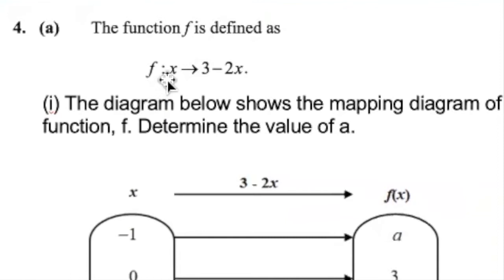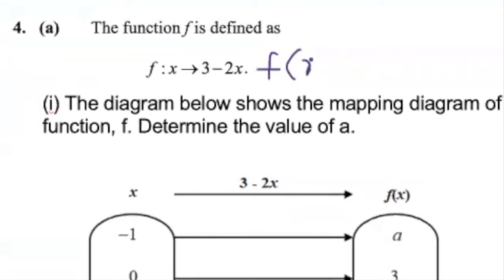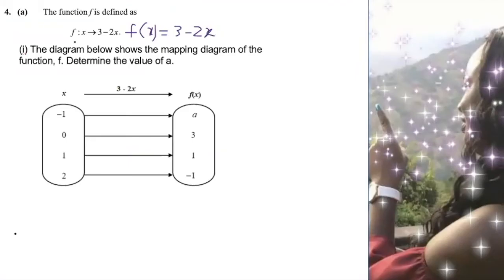The function f is defined as f such that x is mapped onto 3 minus 2x. We are used to rewriting it as f(x) equals 3 minus 2x, replacing the arrow with an equal sign. These two forms are exactly the same, just written in a different way.